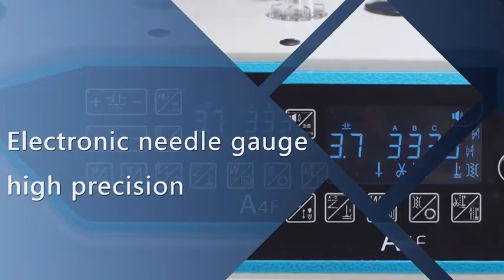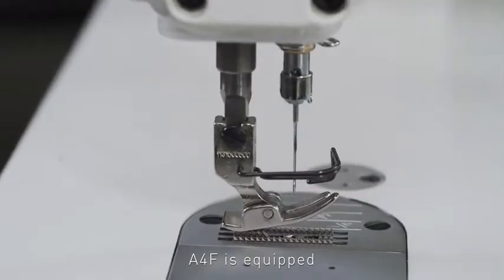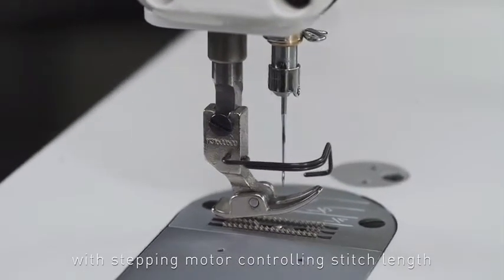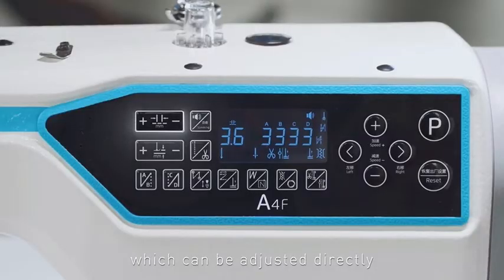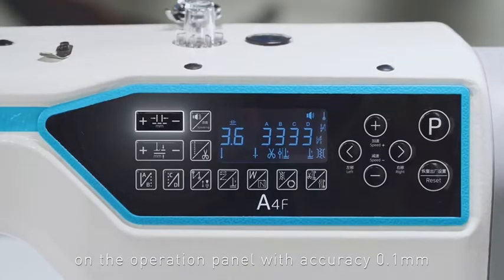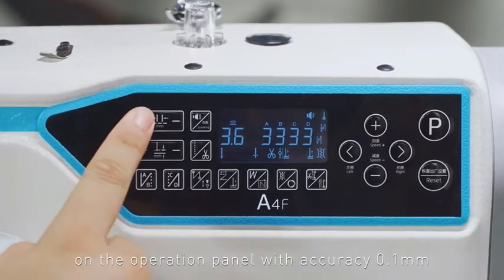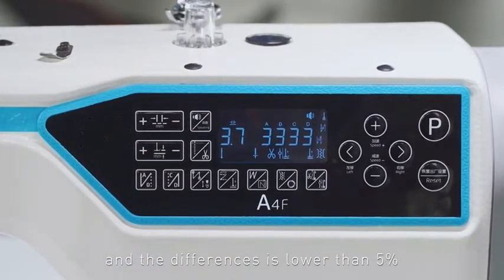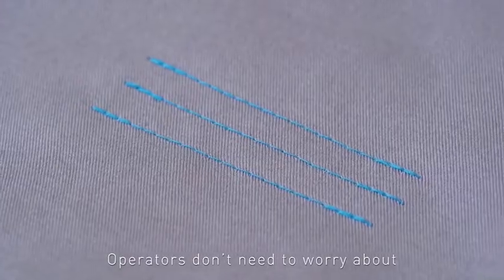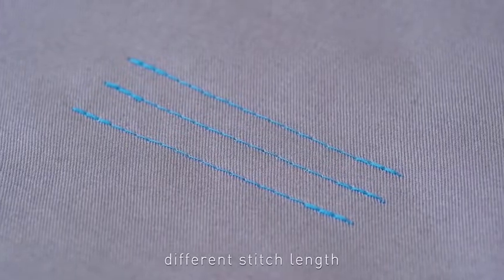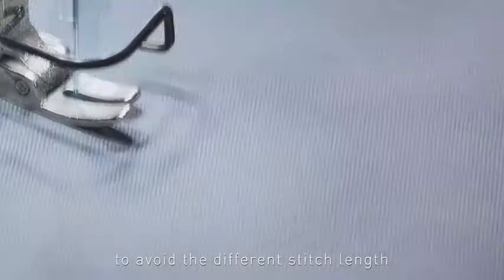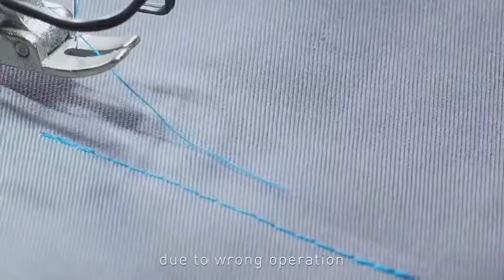The electronic needle gauge provides high precision. The A4F is equipped with a stepping motor controlling stitch length, which can be adjusted directly on the operation panel with 0.1 millimeter accuracy and differences lower than 5%. The stitch length can be locked to avoid variations due to incorrect operation.